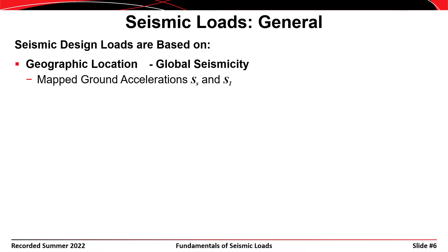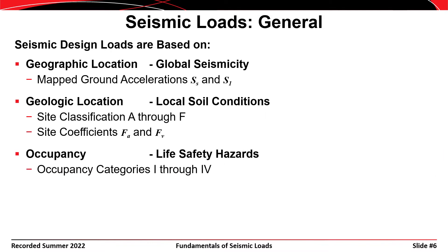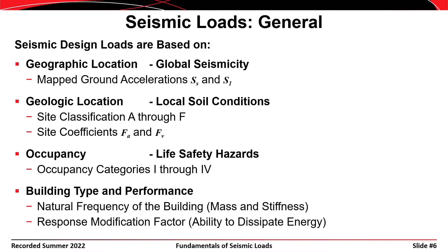The seismic loads we design for are based on four primary components. First, geographic location — where are the seismically active regions? Second, geologic location — the type of soil has a profound effect on loads transferred into the structure; the 1985 Mexico City earthquake is an example, where poor soil amplified destruction. Third, occupancy — we have categories one through four. Fourth, building type and performance — the natural period and frequency of the structure, which depend on mass and stiffness, and how well the structure resists or dissipates earthquake energy.